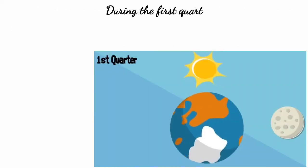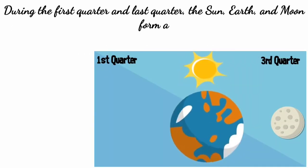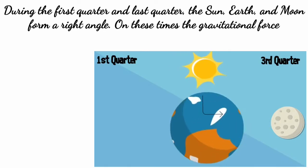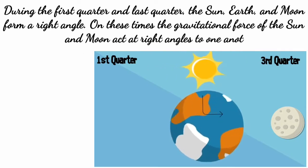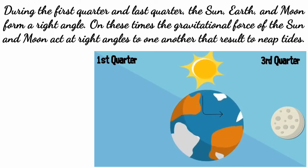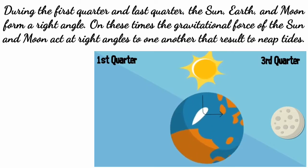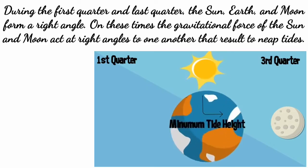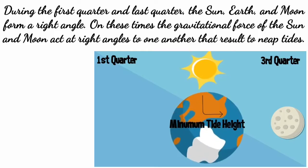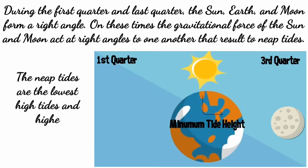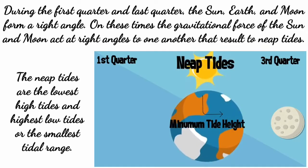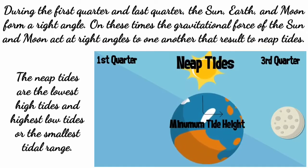During the first quarter and last quarter, the sun, earth, and moon form a right angle. At these times, the gravitational force of the sun and moon act at right angles to one another, resulting in two neap tides. The neap tides are the lowest high tides and highest low tides, or the smallest tidal range.